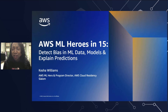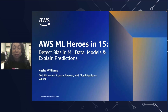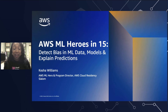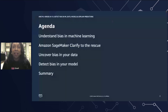Bias is a huge impediment to fully realizing the benefits of machine learning. And if you've worked with machine learning before, you know that to produce a well-performing model, bias needs to be detected and mitigated very early on in the machine learning life cycle. So today, you'll see the power of Amazon SageMaker Clarify to detect bias throughout the machine learning life cycle. Our agenda today: first we'll talk about bias — what is it? And then we'll look at Amazon SageMaker to see how it can help you mitigate bias. We'll talk about uncovering bias in your data and detecting bias in your trained model.